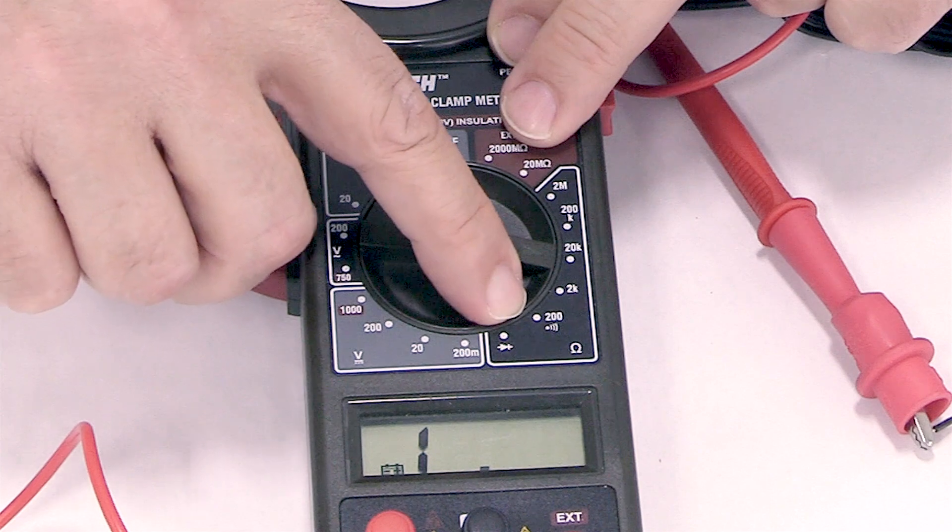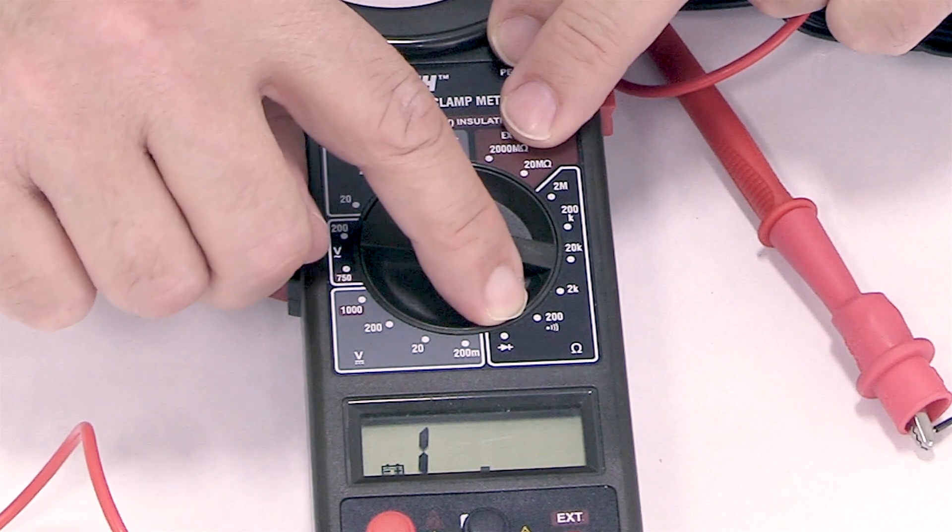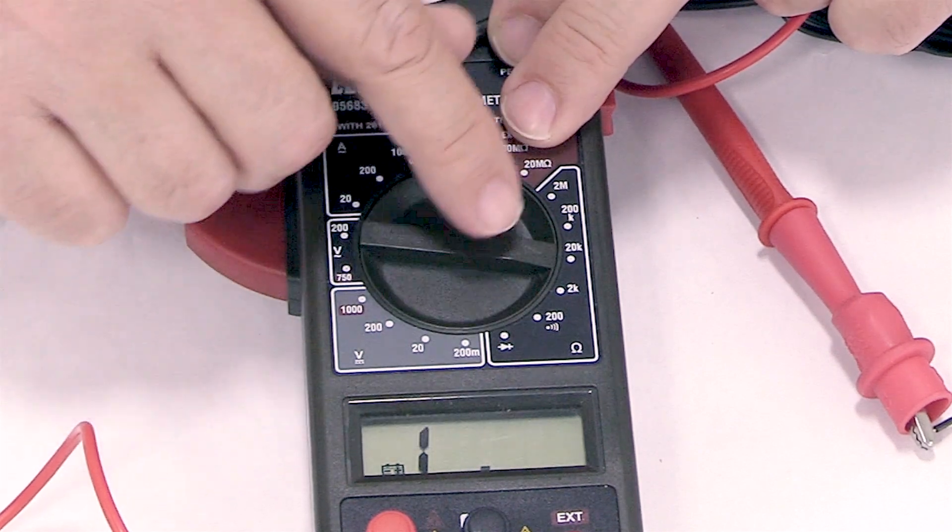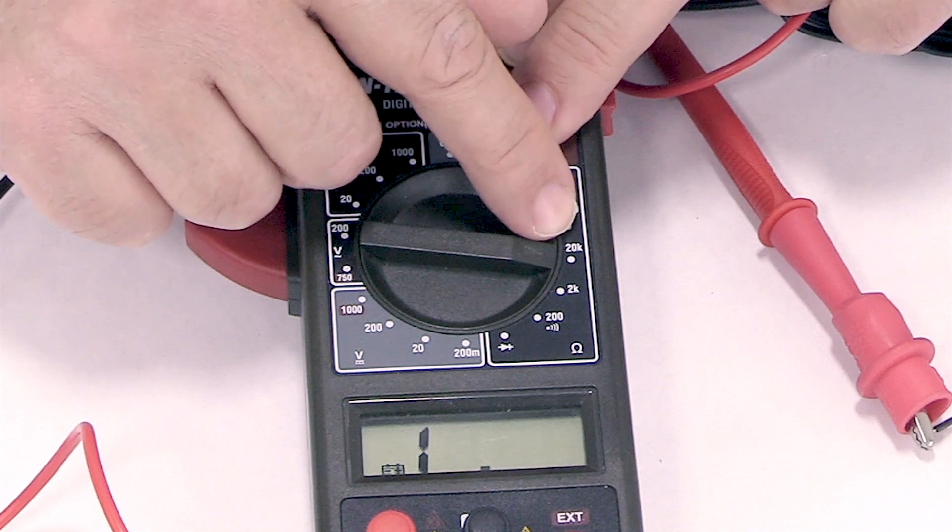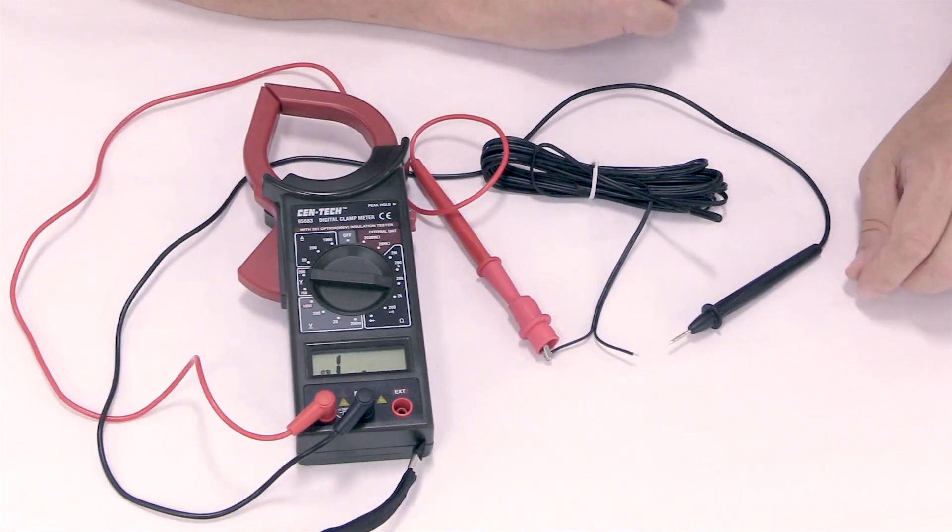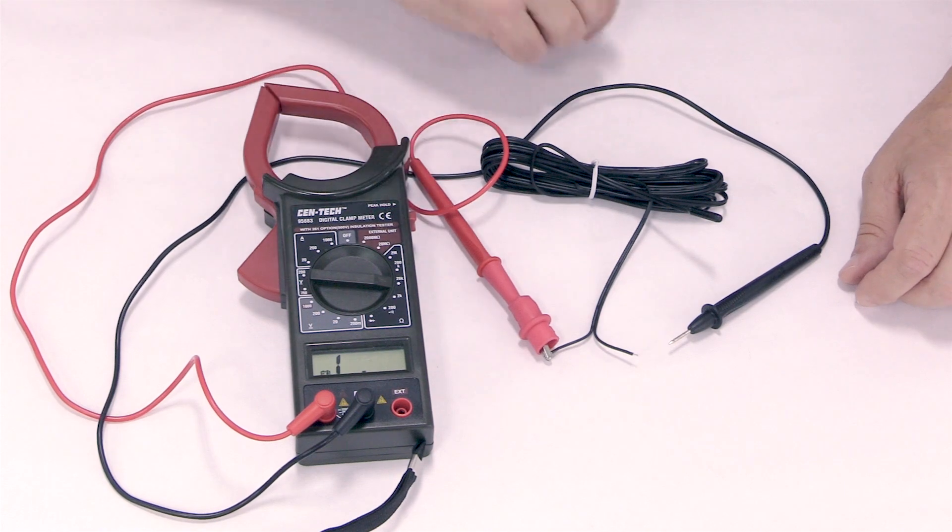The 200 range is what's used to test most of the floor heating product that we sell. But for the sensor, our readings will be done at the 20k range. Now that we know how to set the meter, we have it set at the 20k range.